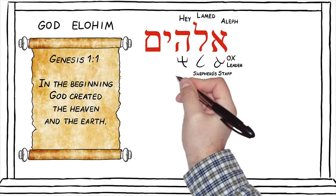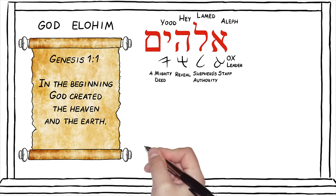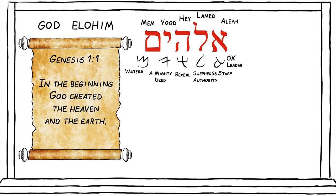Yod, pictured as a hand, means to work, a mighty deed, to make something. Mem is pictured as water. So let's summarize the translation of Elohim — the Hebrew word translated as God over 4,000 times in the English Bible.